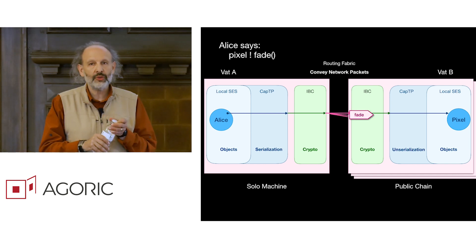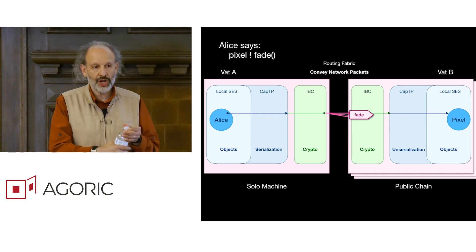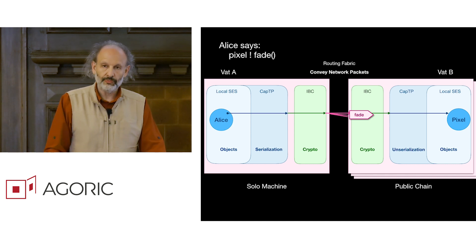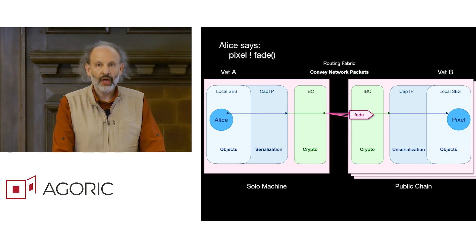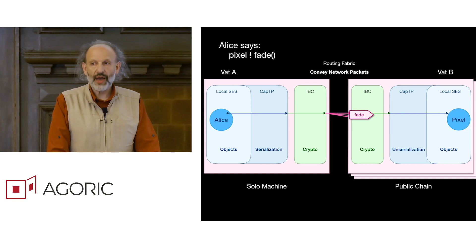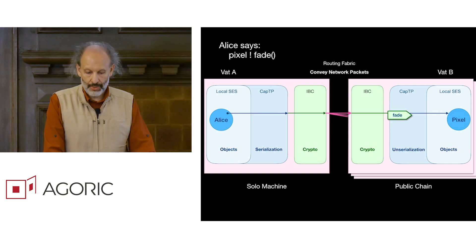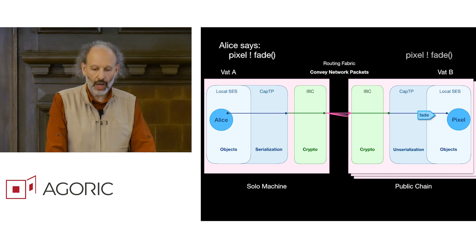And since the receiving machine in this case is a chain, it has to broadcast the message so it arrives at all the relevant validators. And each validator then does the same thing, which is the IBC layer validates and removes the crypto, leaving the binary blob that gets unserialized by the CAPTP layer, turning it into an object message that gets delivered to the pixel.